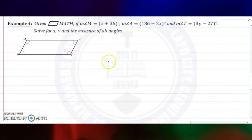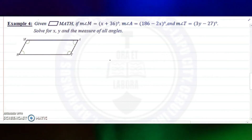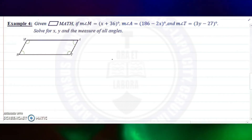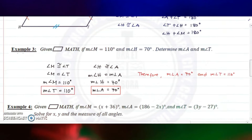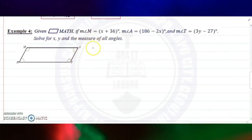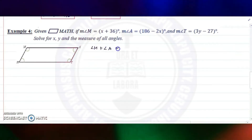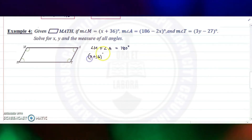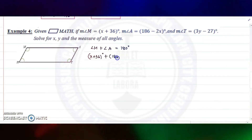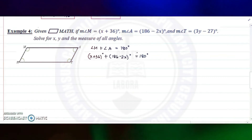Example number four: given parallelogram MATH, if the measure of angle M is (x + 36) degrees, the measure of angle A is (186 − 2x) degrees, and the measure of angle T is (3y − 27) degrees, solve for x, y, and the measure of all angles. Using property three, angle M plus angle A equals 180 degrees: (x + 36) + (186 − 2x) equals 180 degrees.